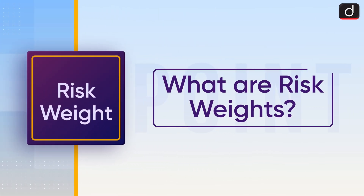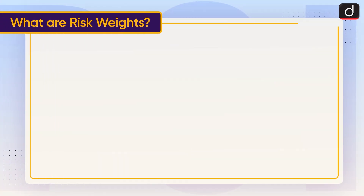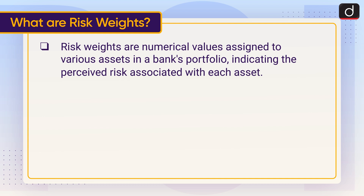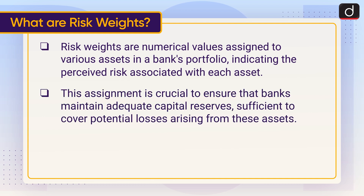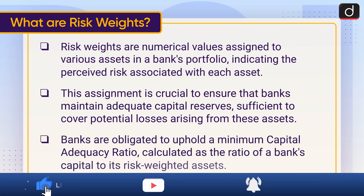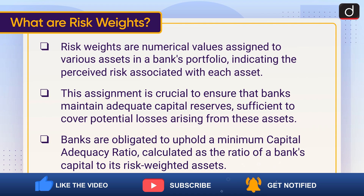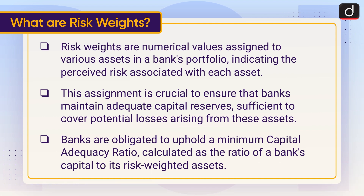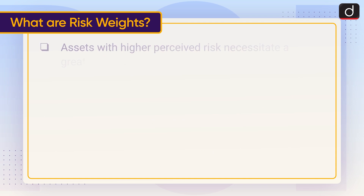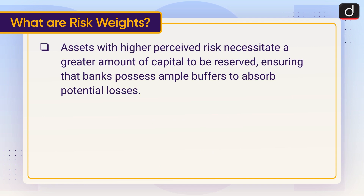Now let's discuss what are risk weights. Risk weights are numerical values assigned to various assets in a bank's portfolio, indicating the perceived risk associated with each asset. This assignment is crucial to ensure that banks maintain adequate capital reserves sufficient to cover potential losses. Banks are obligated to uphold a minimum capital adequacy ratio, calculated as the ratio of a bank's capital to its risk-weighted assets. Assets with higher perceived risk necessitate a greater amount of capital to be reserved, ensuring that banks possess ample buffers to absorb potential losses.